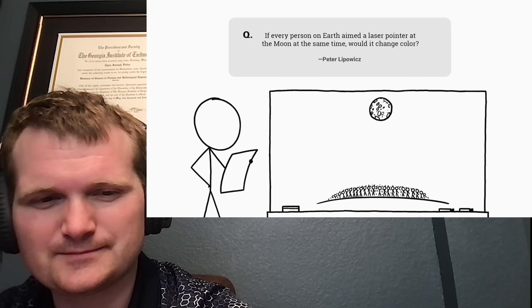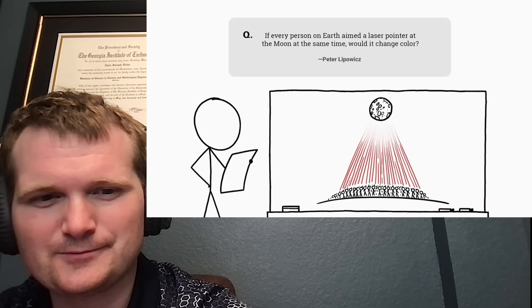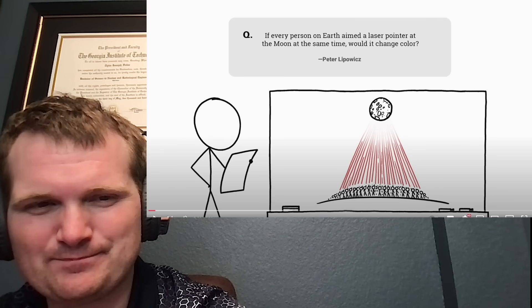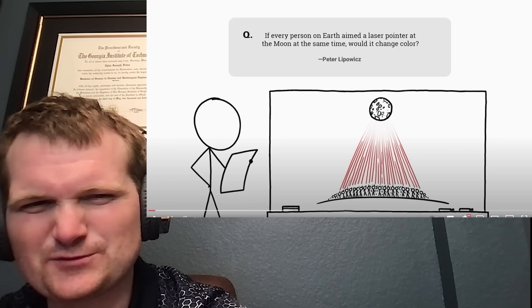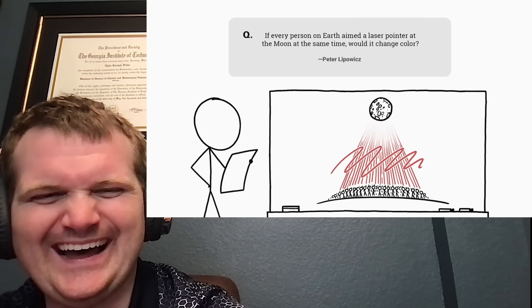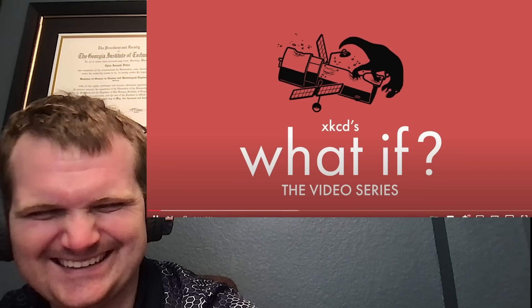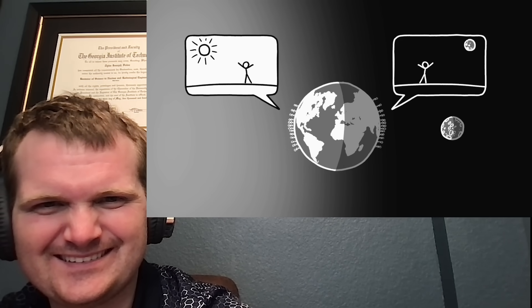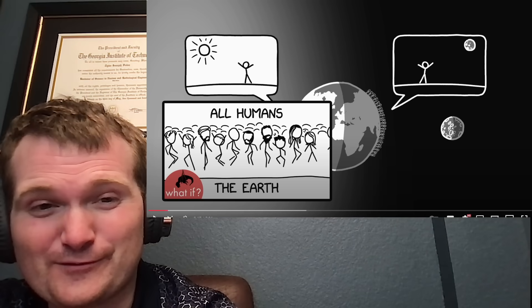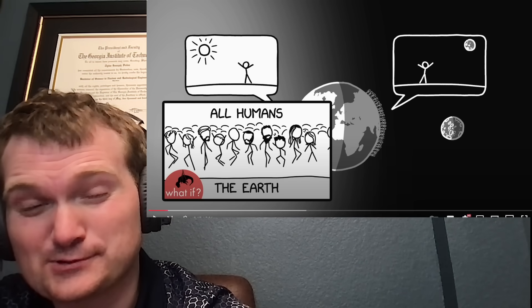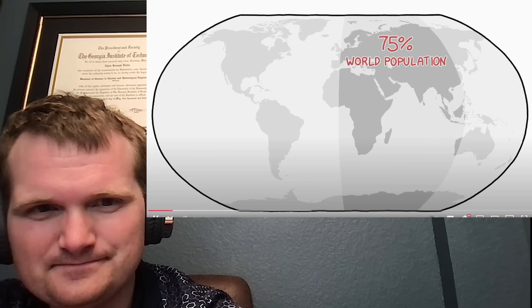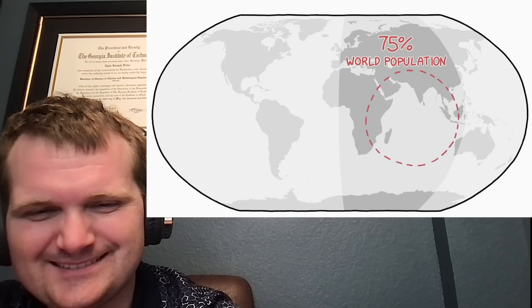This question comes from Peter, who asks, If every person on Earth aimed a laser pointer at the moon at the same time, would it change color? Nah, the beams would be too faint by the time they reach there. Especially if we're talking laser pointers on the order of a milliwatt. The first thing to consider is that not everyone can see the moon at once. We could gather everyone into one spot, but the logistics of getting everyone there without teleportation are horrific.